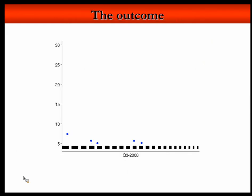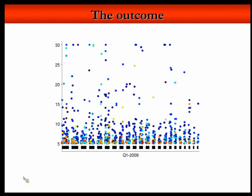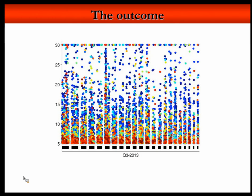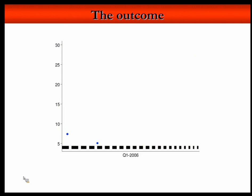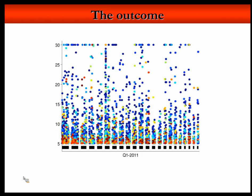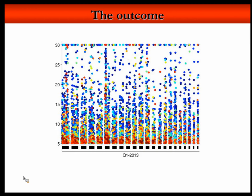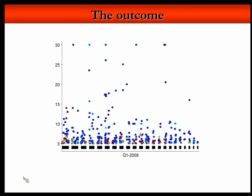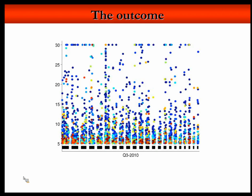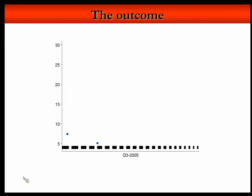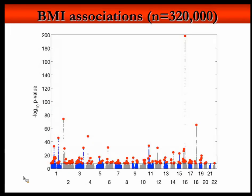Looking at all GWAS published in the literature over the past 10 years cumulatively, there were very few studies initially, then a big boom around 2008 when these studies became really cheap — it now costs about 100 francs to genotype one individual. You can see a major peak on chromosome 6 in the HLA region, and otherwise there are hits everywhere across the genome. Every segment of the genome is now associated with some trait.